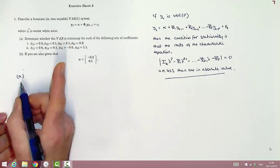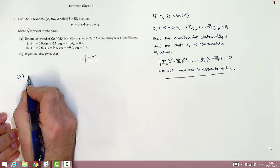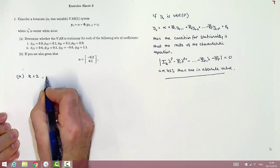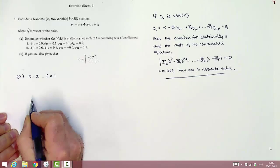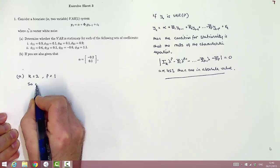Now turning to the specifics of this question, we're told it's a bivariate VAR, so the dimension of the system k is equal to 2. We're also told that it's a first-order VAR, so p is equal to 1.